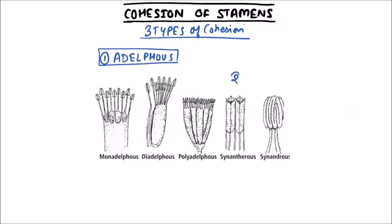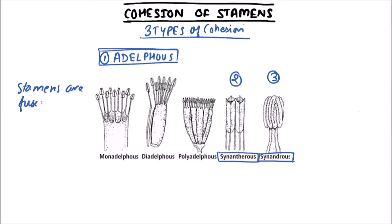The second one is synantherus, and the third one is synandrus. In adelphus, stamens are fused by their filaments only. These are further classified into three groups.